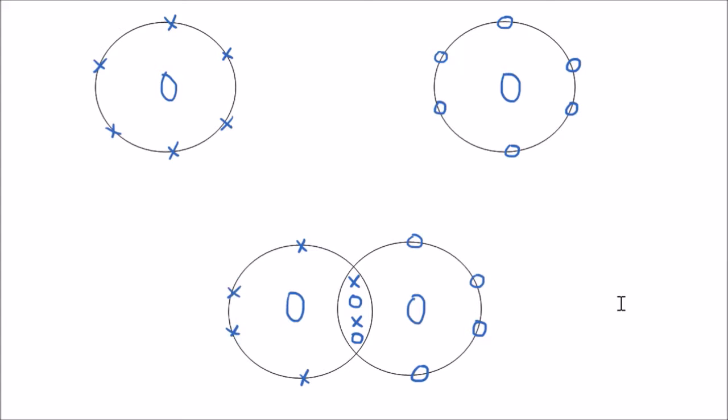So each oxygen atom shares two electrons instead of just one, and this is called a double covalent bond because there are two pairs of electrons involved. So it forms O2, that's the oxygen molecule. It can also be represented like so, and this shows the double bond, the double covalent bond.